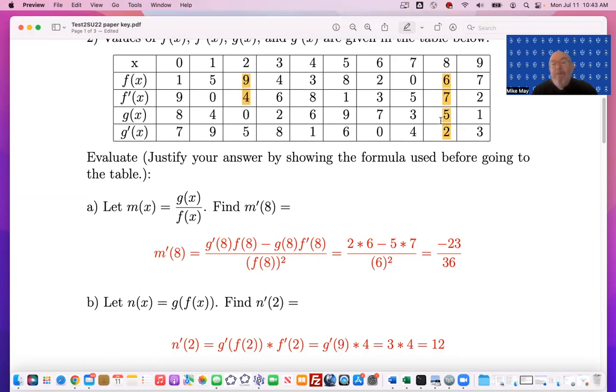Now I need g prime of 9, and that's 3. 3 times 4 is 12.